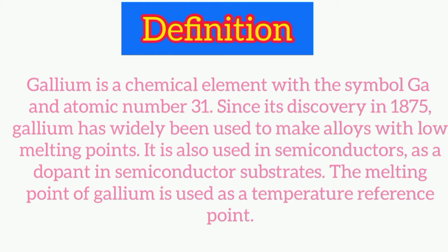Since its discovery in 1875, gallium has widely been used to make alloys with low melting points. It is also used in semiconductors as a dopant in semiconductor substrates. The melting point of gallium is used as a temperature reference point.